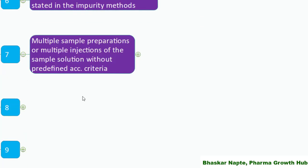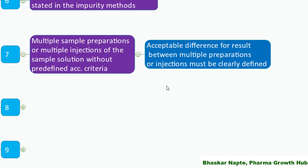The next point: multiple sample preparations or multiple injections of sample solutions without predefined acceptance criteria. In some cases, the method of analysis mentions duplicate sample injections for assay, which is not a problem, but do you have suitable predefined acceptance criteria to accept those two injection results? For example, the difference between two assay results should not be more than 2%. If following multiple injections or preparations, clearly mention the predefined acceptance criteria so results can be accepted or invalidated.